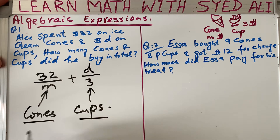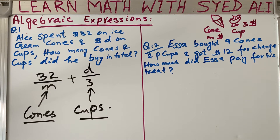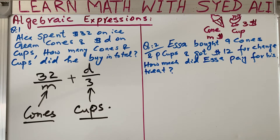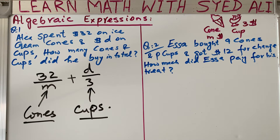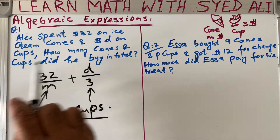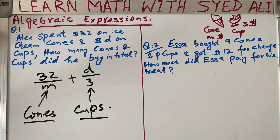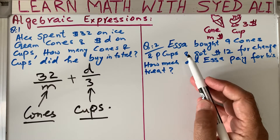If the values of the variables are given, you can find how many cones or cups were bought. This is a generalized algebraic expression where the variables are not known, but whatever the question states, we make the expression accordingly. When you substitute the value of the variable, you can get the numerical answer.